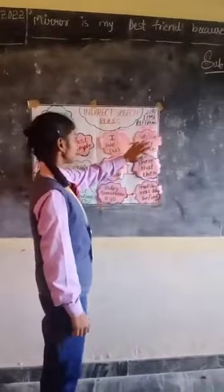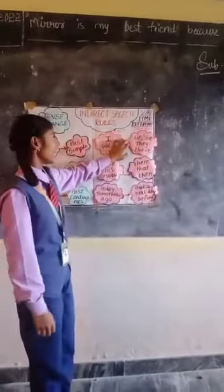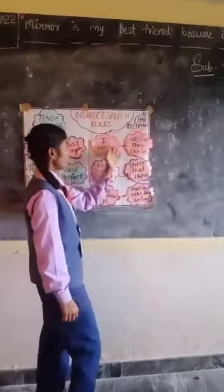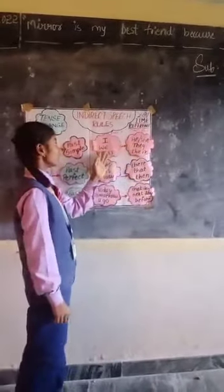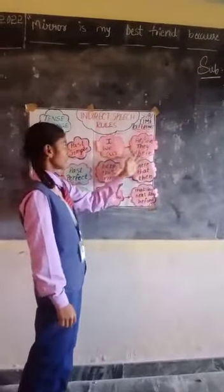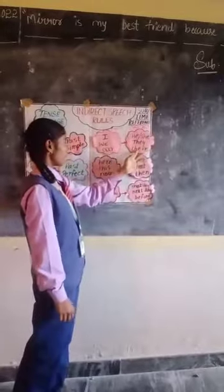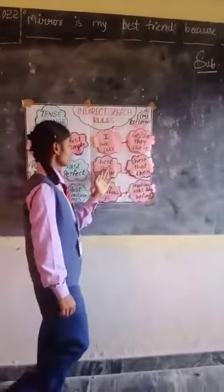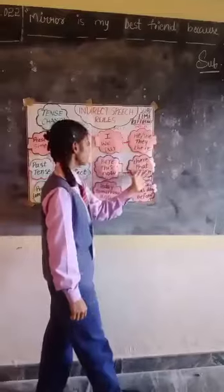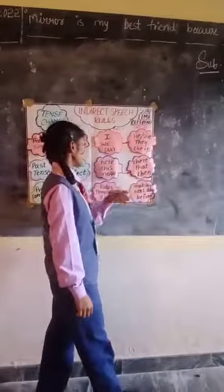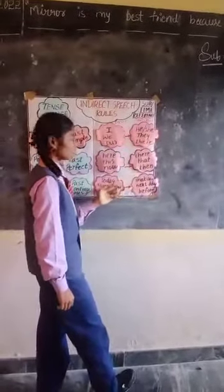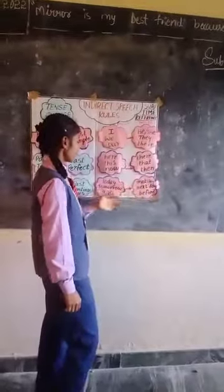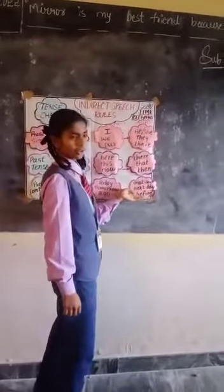Let me see the time and pronoun references between direct and indirect speech. Here, 'I' will become 'he' or 'she'. 'We' will become 'they'. 'Our' will become 'their'. 'She' will become 'they'. 'This' will become 'that'. 'Now' becomes 'then'. 'Today' will become 'that day'. 'Tomorrow' will become 'next day'. 'Ago' becomes 'before'.